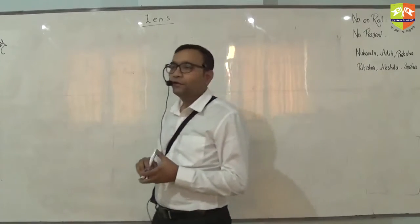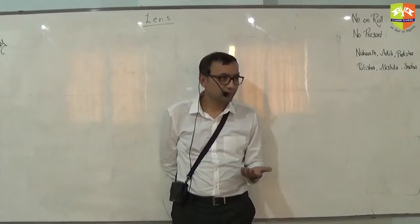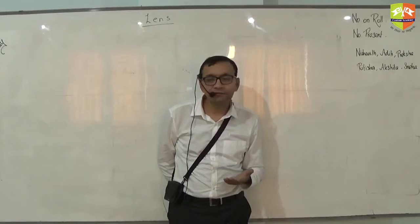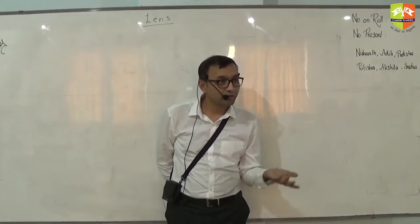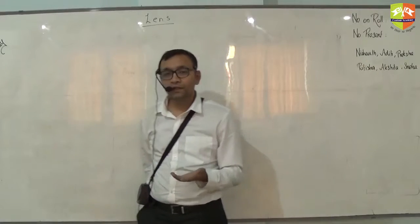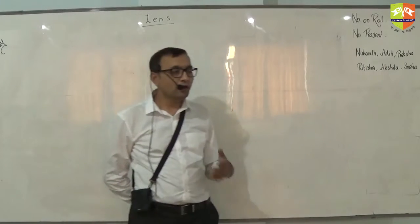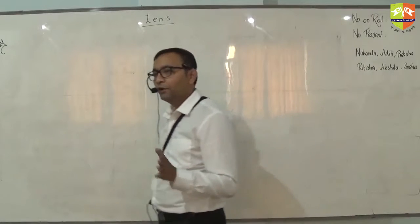Before we even proceed talking about lenses, we should first try to find out few terminologies which we'll be using to explain about lens. For example, in case of mirror what things have we used to explain what is happening - there is curvature, center of curvature, and then focal length, aperture and all that. Similarly let's see what are the terminologies for lens.